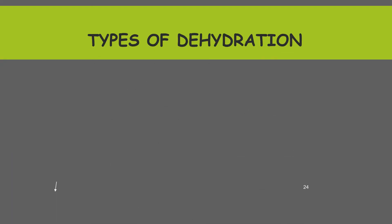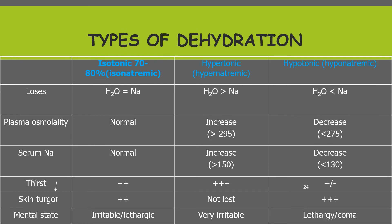The types of dehydration can be classified into isotonic, hypertonic, and hypotonic dehydration. The most common is isotonic dehydration, where both sodium and water are lost equally, plasma osmolarity is normal, and serum sodium is normal — this happens most of the time in diarrhea. Hypertonic and hypotonic dehydration are rare. For example, hypotonic dehydration may occur if we give plain fluid to a dehydrated child, and hypertonic dehydration may occur in the case of diabetes insipidus.